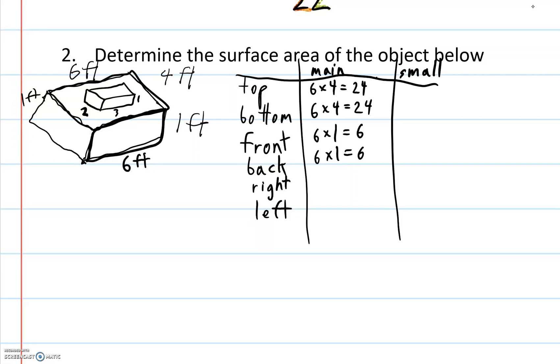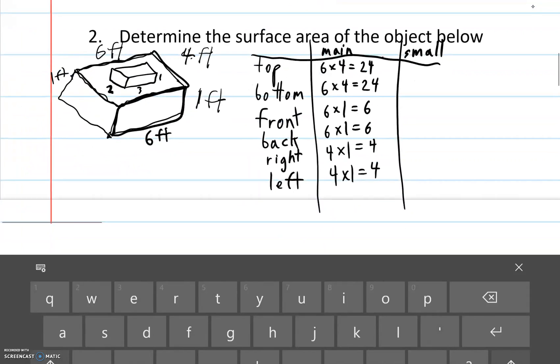And then my right and my left are both going to be 4 times 1. You should be able to see 4 here and 1 here. 4 times 1. So 4, 4, and that's my main shape.